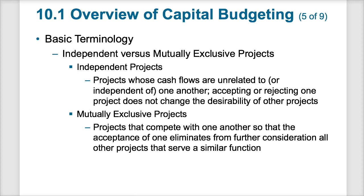For example, an independent project might be a series of five to ten projects where all of them could be accepted if the capital pool is large enough and all are profitable. But a mutually exclusive project might be a situation where you have one piece of land and have to decide whether to sell it, build a building on it, build a restaurant on it, or do nothing — you can't do more than one. A common example: you need to connect two islands, so you're either going to build a bridge or a tunnel. You're not going to do both.